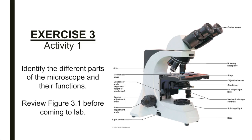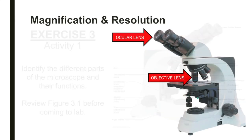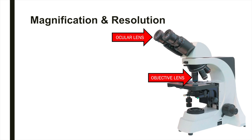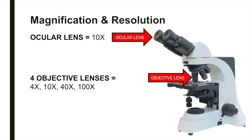In exercise three, activity one, you'll be identifying the different parts of the microscope and their functions. Please familiarize yourself with figure 3.1 before coming to lab. The compound microscope is able to magnify a specimen through the interplay of two lenses: the ocular lens within the eyepiece and the objective lens. The ocular lens has a magnification power of 10, while the objective lenses have a magnification of 4, 10, 40, and 100. The total magnification of any specimen being viewed is equal to the power of the ocular lens multiplied by the power of the objective lens.